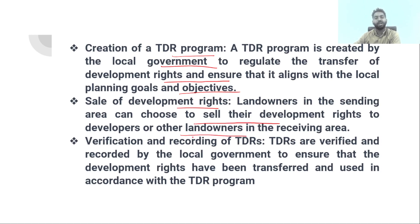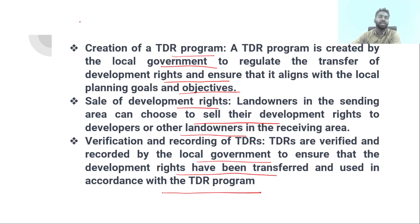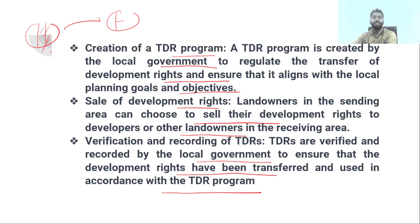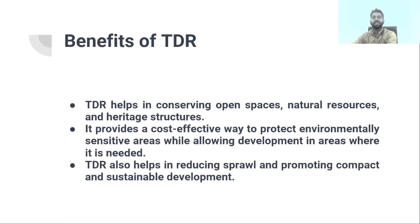TDR is verified and recorded by the local government to ensure that the development rights have been transferred and used in accordance with the TDR program. For example, if one property has used 50% and another 10% and 20%, totaling 70%, and a third has used 10%, those records are tracked. The local authority — such as the municipal corporation — manages and oversees this process.